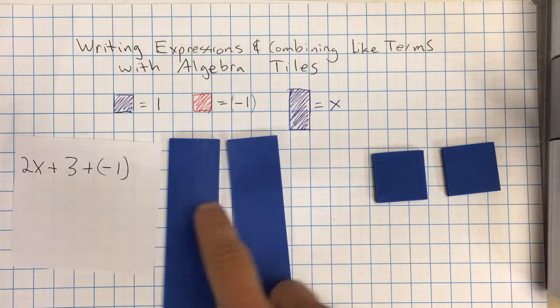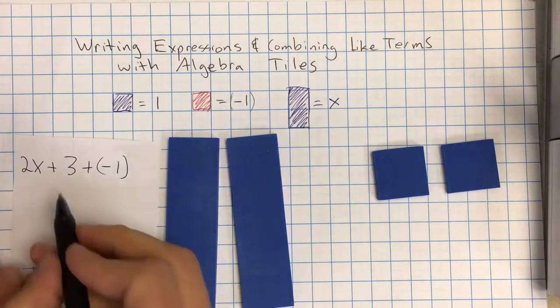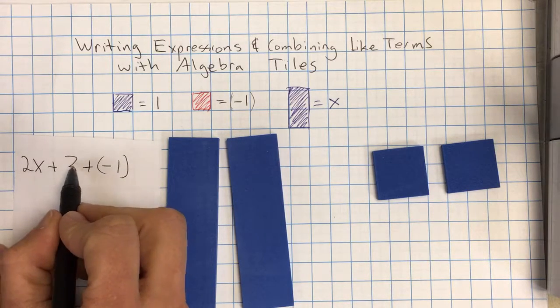Okay, and that equals 0. So we have 2x plus 2. So what this tells us is if we combine these terms, we end up with 2x plus 2.